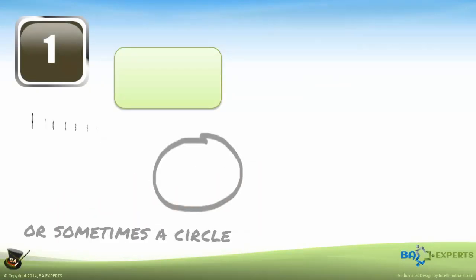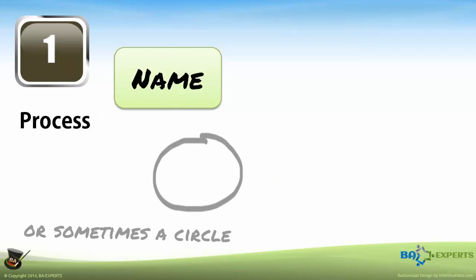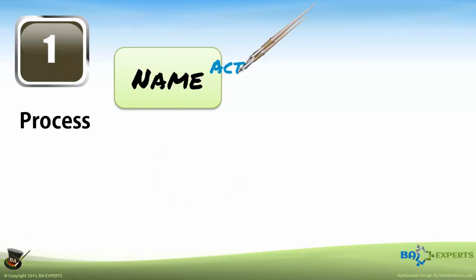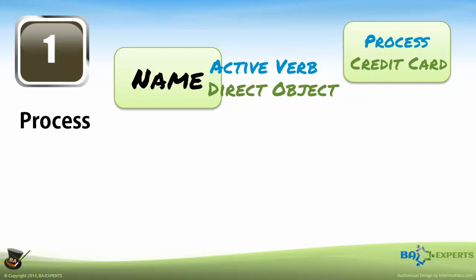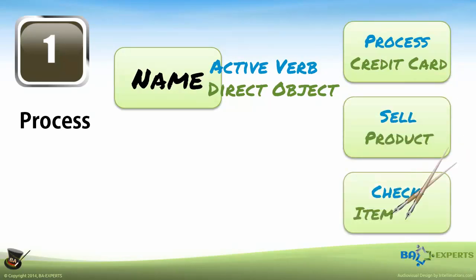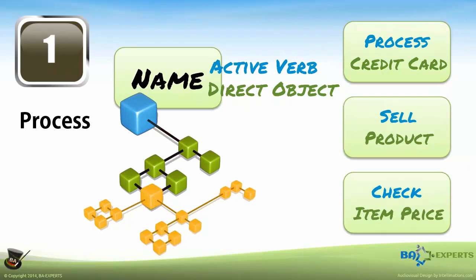A rounded rectangle represents a process at some level of detail that has to have a name. The name consists of an active verb — what is done — and a direct object — what it is done to. For example: process credit card, sell product, check item price. As you can see from the examples, the named process can be at any level of detail, from the very large, like 'sell product,' to the minute, like 'check item price.'